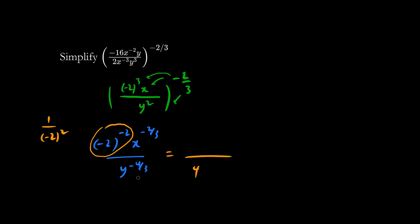Negative 2 to the negative 2 is 1 over negative 2 squared, which is 1 over 4. So we put a 4 on the bottom, and switch bottom and top, giving x to the 2 thirds on top and y to the 4 thirds on the bottom.